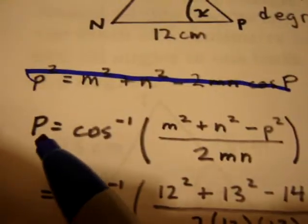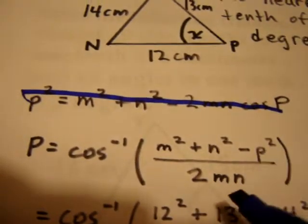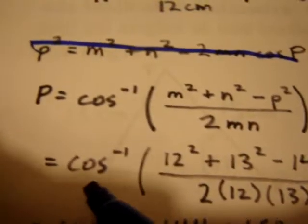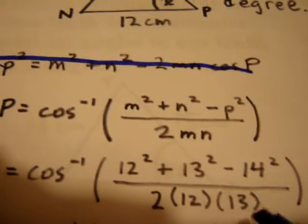So, I can write that capital P is the cos inverse of M squared plus N squared minus P squared all over 2MN, which is the cos inverse of 12 squared plus 13 squared minus 14 squared all over 2 times 12 times 13.